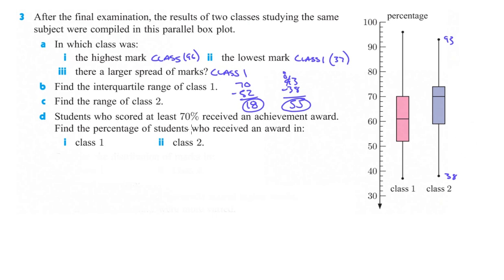Students who scored at least 70% received an achievement award. Find the percentage of students who received an award in class one. So, at least 70%, that's this right here, this line. Up above this line is going to be the achievement award. Remember, each part of the box and each whisker is 25%. So, that's going to be 25% of the data here. So, 25% in class one received the award. This one here, this whisker is 25%. And also, from the median to quartile three is also another 25%. So, they ended up with 50% got an award.